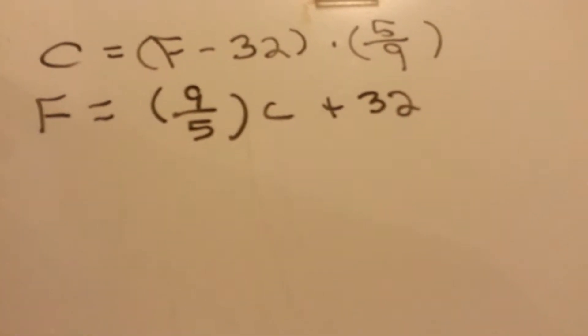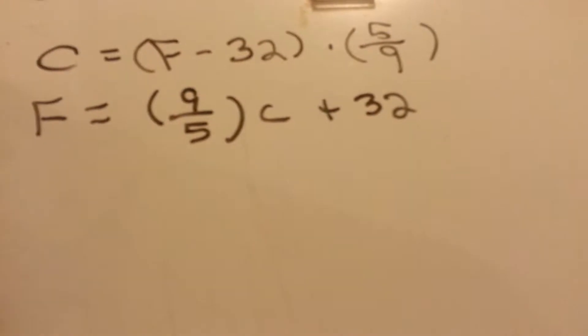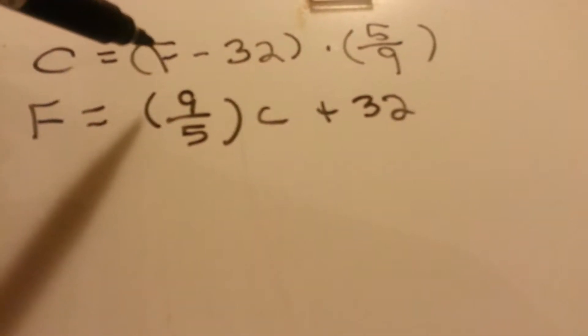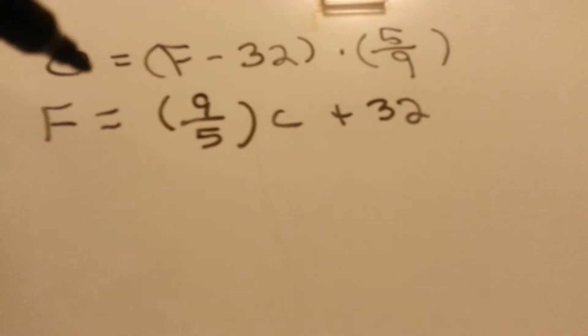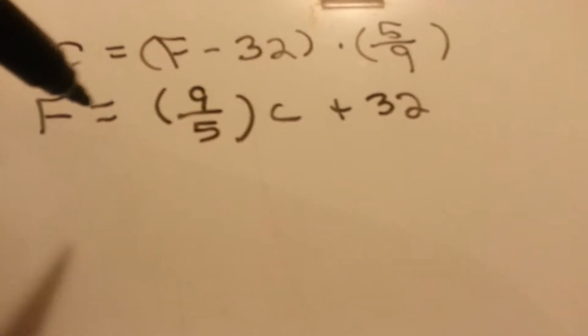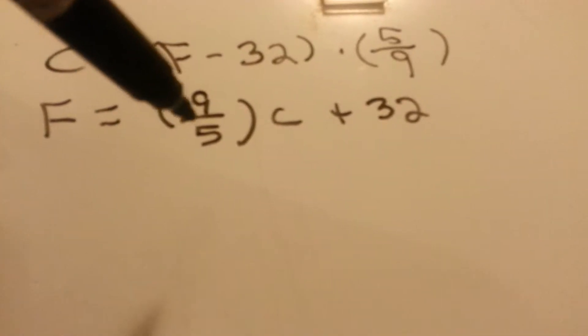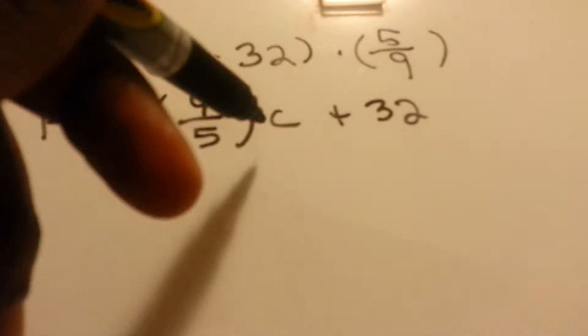The formula to get Celsius, the regular formula is C equals F minus 32 times 5 over 9. And for Fahrenheit is F equals 9 over 5 degrees Celsius, C plus 32.